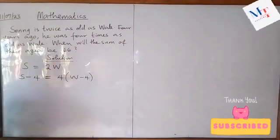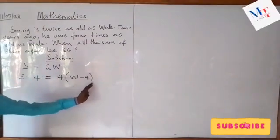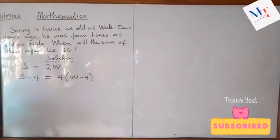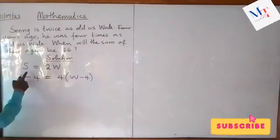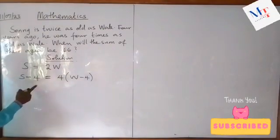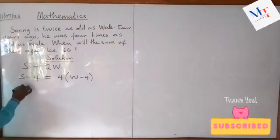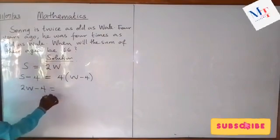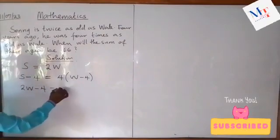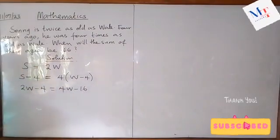So that is the second equation: S minus four equals four times W minus four. We now have these two equations and we can solve by substituting the value of S here into equation two. Since S equals two W, I can write this as two W minus four equals four times W minus four.